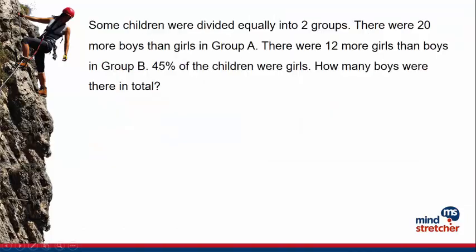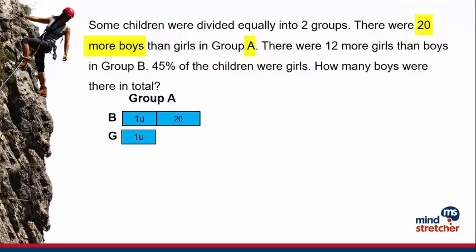Let us take a look at this question. Some children were divided equally into 2 groups. There were 20 more boys than girls in group A. We can draw models to visualize the information. We use 1 unit to represent the number of girls. Therefore, the number of boys is 1 unit plus 20.